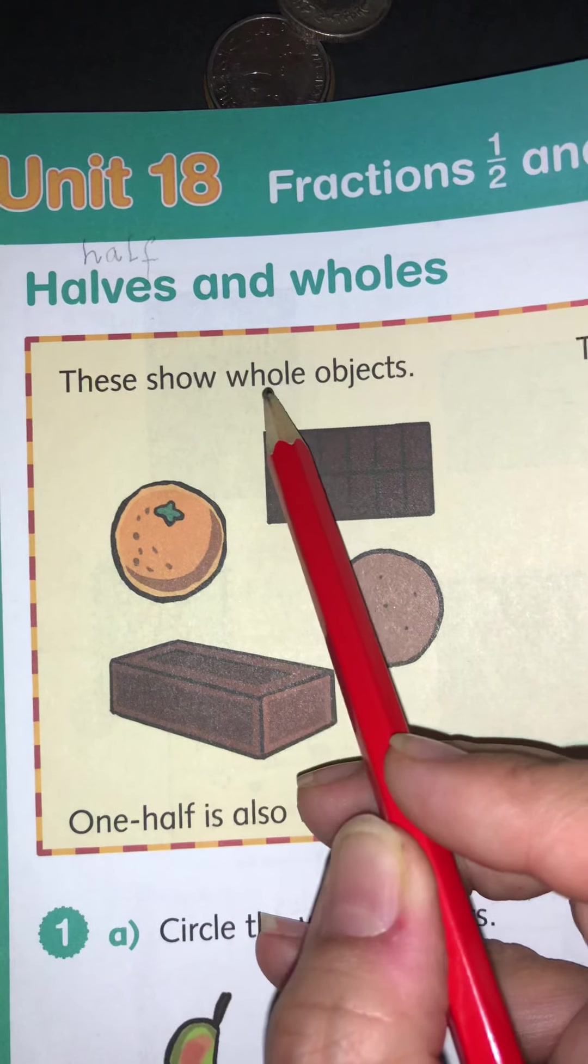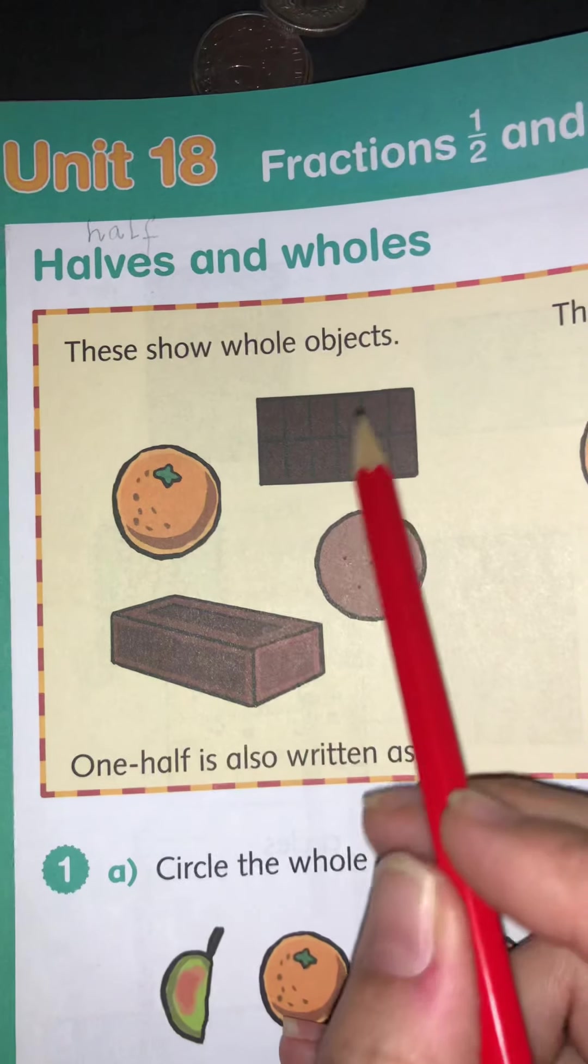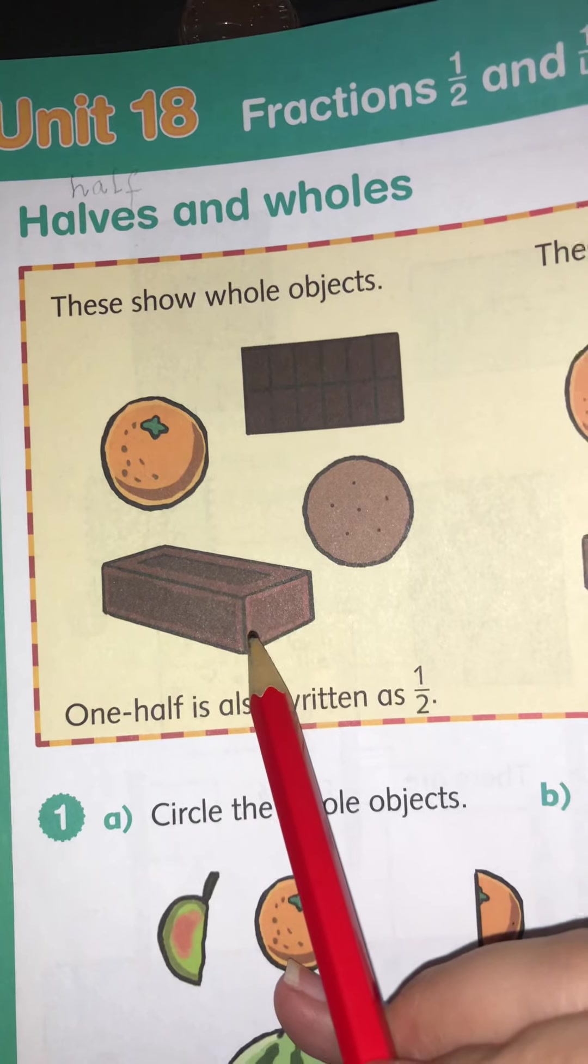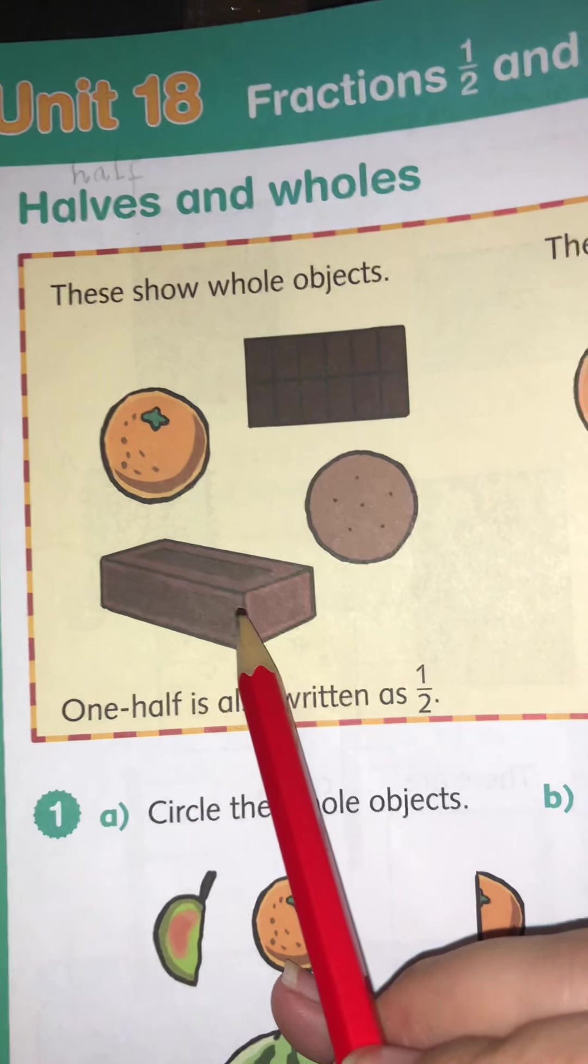These show whole objects. A bar of chocolate, an orange, that's a biscuit. Is it a biscuit? No, what you call that? The cake.